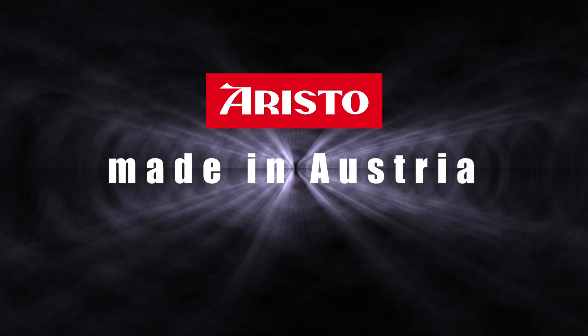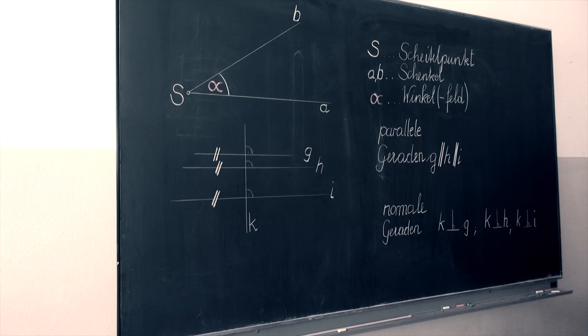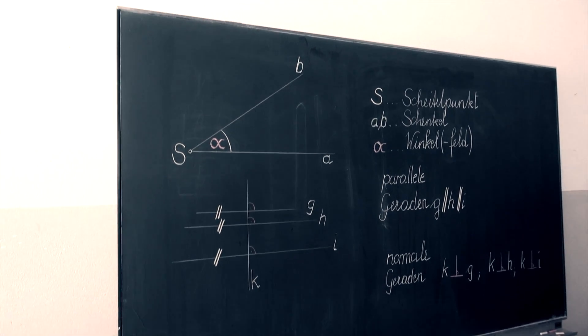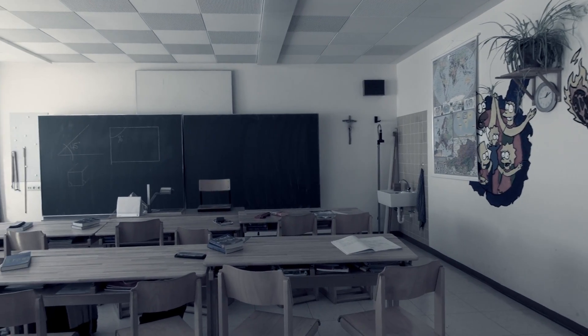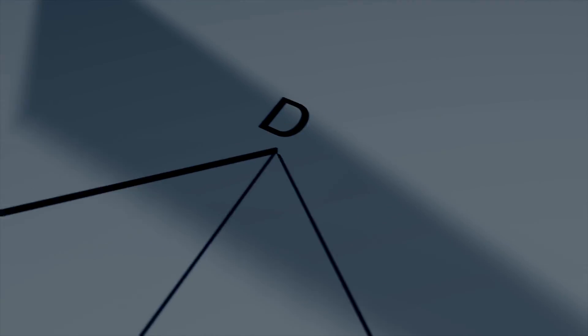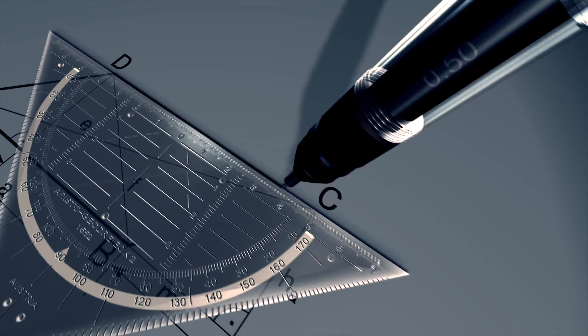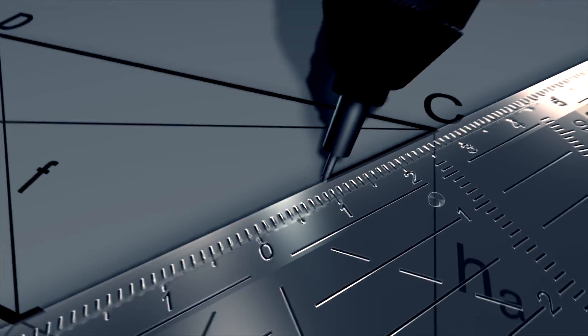Almost everybody has used one at some stage during their school days. The original Aristo geometrical set square, the Geodreieck, was developed and became a registered trademark in 1964 and rapidly established itself as the standard drawing tool in schools and in the workplace.